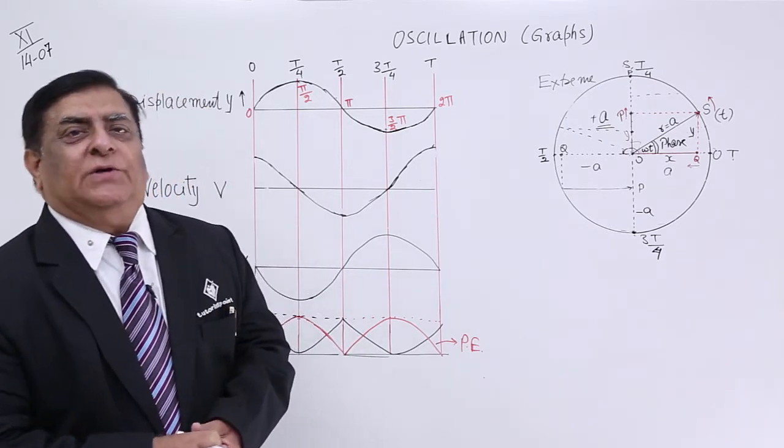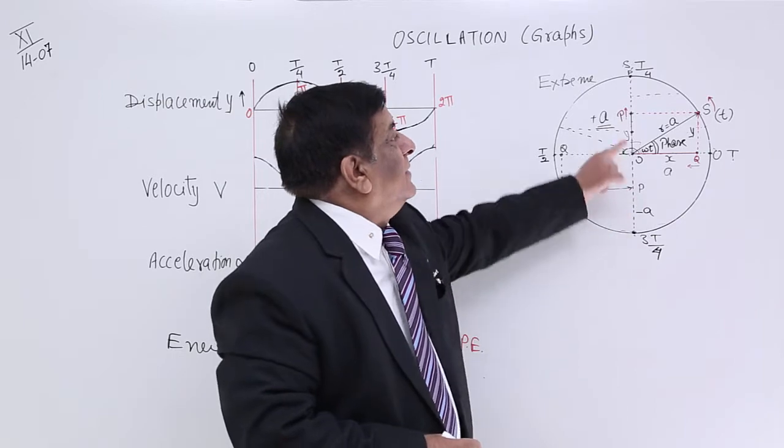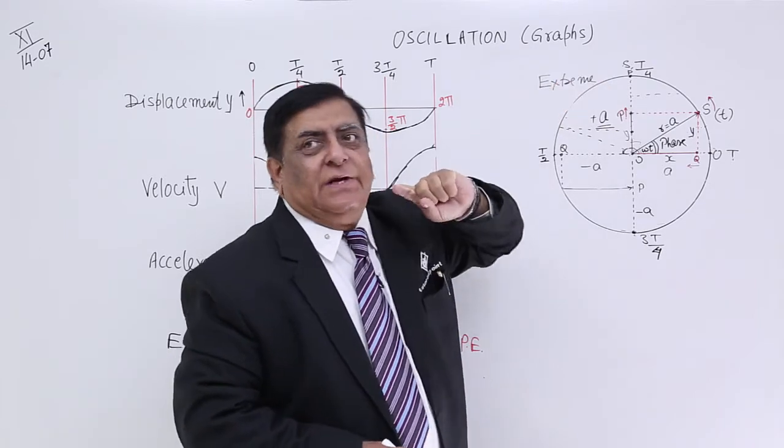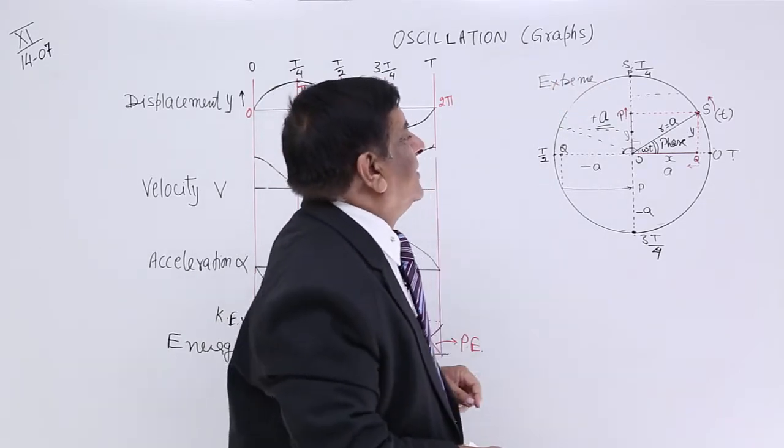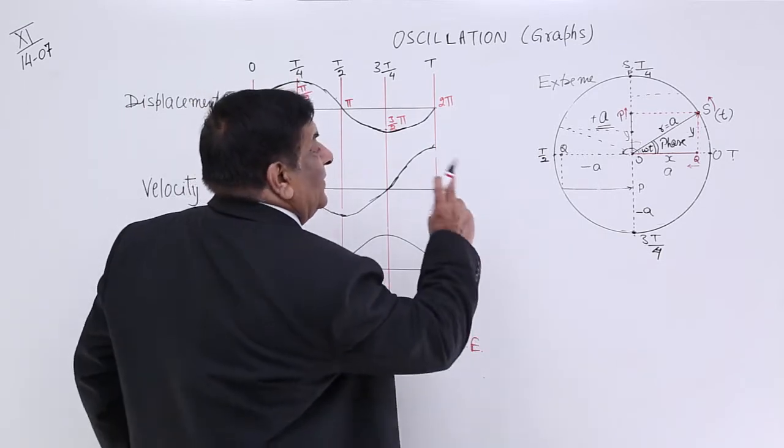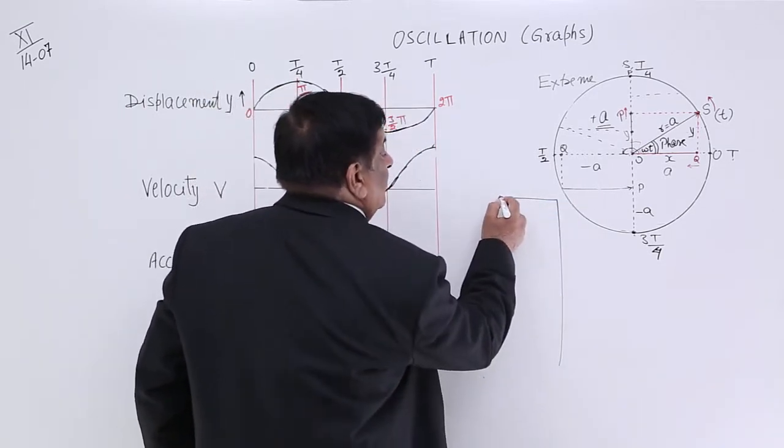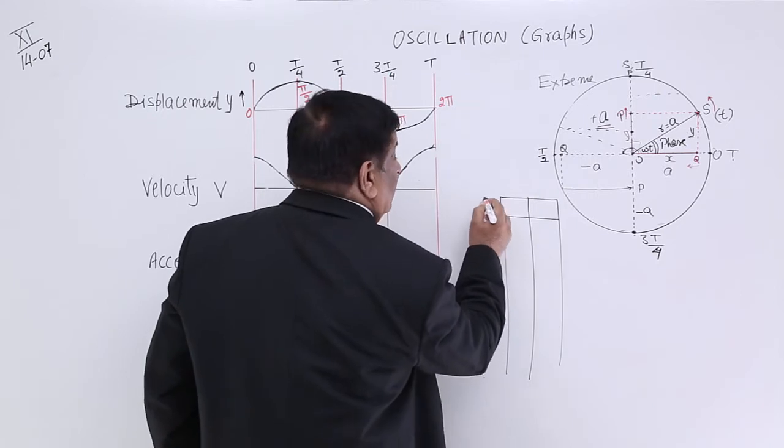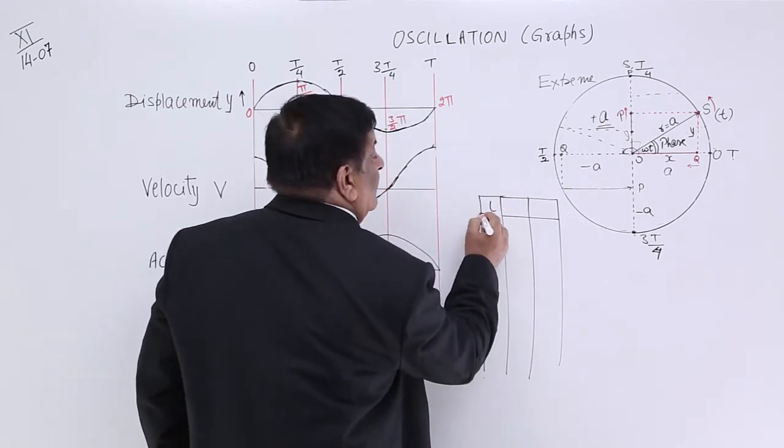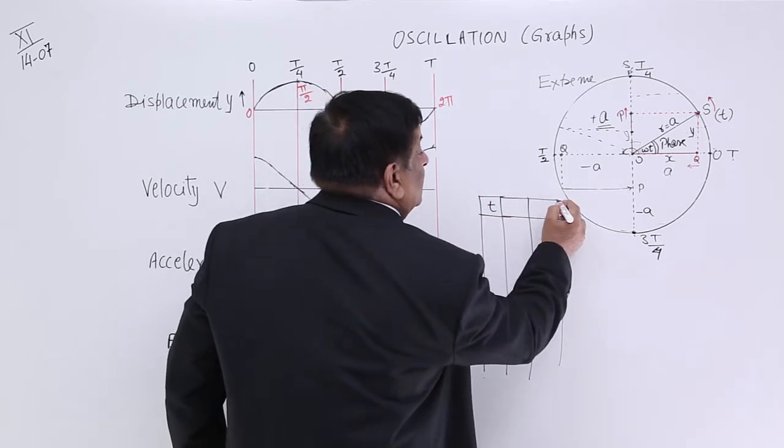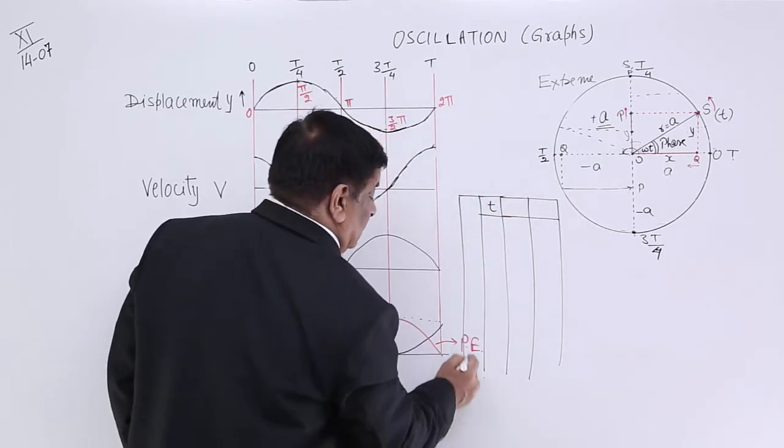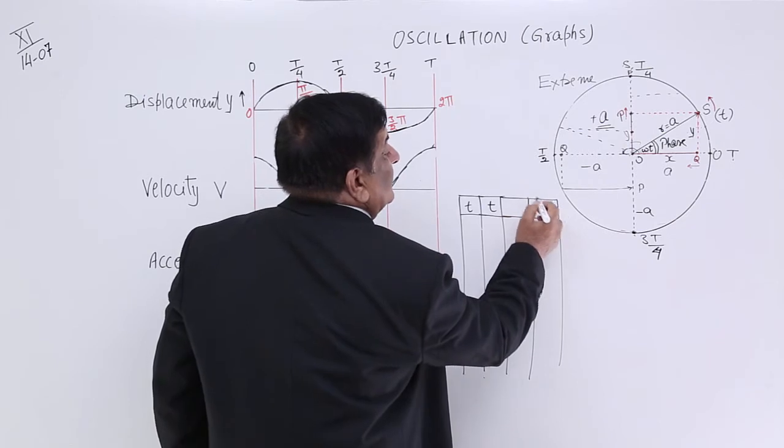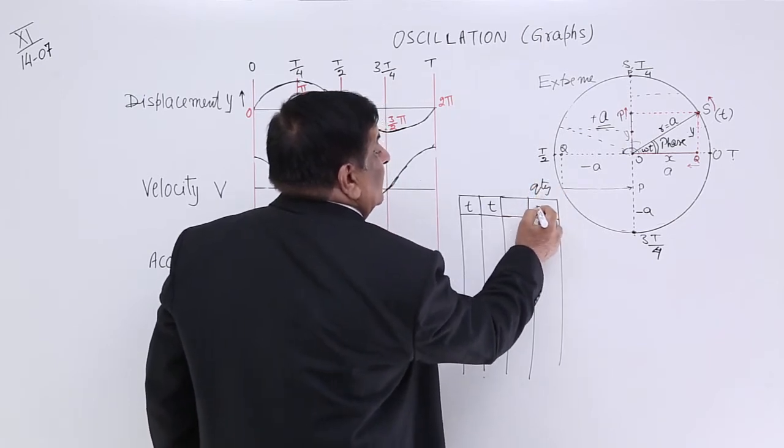We have seen different quantities during simple harmonic motion. P is doing the simple harmonic motion. Now we will tabulate the graph for different quantities. First, the graph for displacement. Every graph is made with help of a table like this. Here there are two things: one is time, and the other is value of the quantity. For the first, we take quantity y.